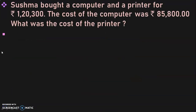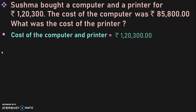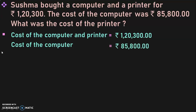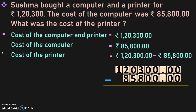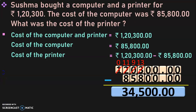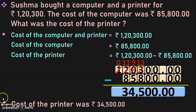Next sum: Sushma bought a computer and a printer for Rs. 1,20,300. The cost of the computer was Rs. 85,800. What was the cost of the printer? Write the statements: cost of computer and printer = Rs. 1,20,300; cost of computer = Rs. 85,800. Cost of printer = 1,20,300 minus 85,800. Subtracting, the answer is Rs. 34,500. Therefore, the cost of the printer was Rs. 34,500.